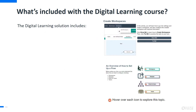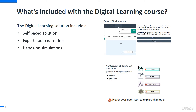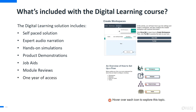The ALM Octane digital learning course is narrated by one of our deeply knowledgeable subject matter experts to help you gain greater insights and value from your learning experience. The course allows you to walk step-by-step through the product using hands-on simulations, or simply sit back and watch as the course demonstrates each process for you. Each module contains job aids which can be downloaded for later reference, as well as module reviews to reinforce your comprehension. The digital learning courses remain available to you for an entire year, so you can return to any module, simulation, or product demo as the need arises.